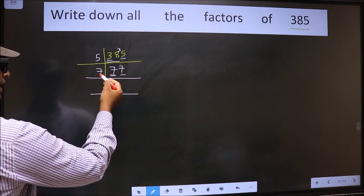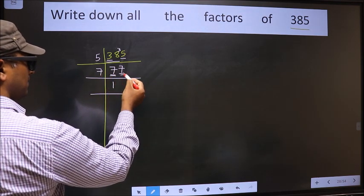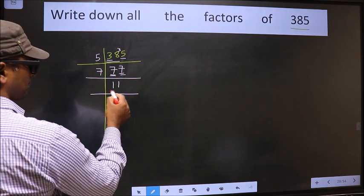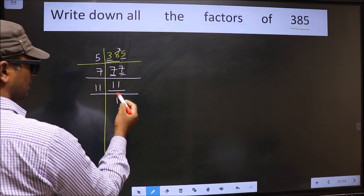First number 7, when do we get 7 in the 7 table? 7 once is 7. The other number 7, when do we get 7 in the 7 table? 7 once is 7. Now we have 11 here. 11 is a prime number, so 11 once is 11.